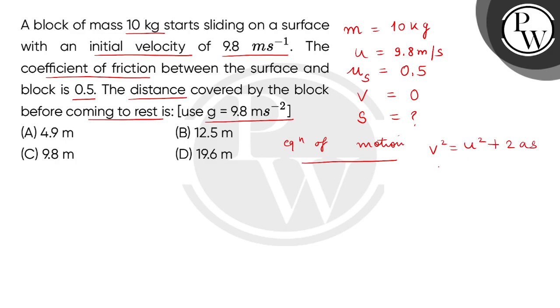When we put values, V value is 0. So 0 squared equals 9.8 squared plus 2 times A times S. A value and S value are unknown.